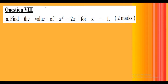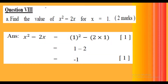Find the value of x square minus 2x for x equals 1. This carries 2 marks, with 1 mark for substitution. Substituting: 1 square minus 2 into 1, which gives 1 minus 2 equals minus 1. The substitution step carries 1 mark and the final answer carries 1 mark.